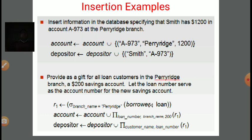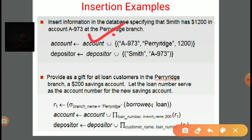So we need to add this particular tuple to the existing account relation. Any tuple is added in the form of a set. On the right side, account is the existing relation, and we perform a union operation with the new tuple written in curly brackets: account ← account ∪ {(A973, Paris, 1200)}. For the depositor relation, we add Smith's name and the corresponding account number A973: depositor ← depositor ∪ {(Smith, A973)}. In this manner, we can perform the insertion operation.